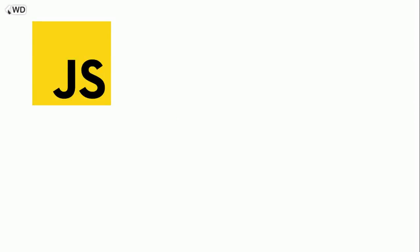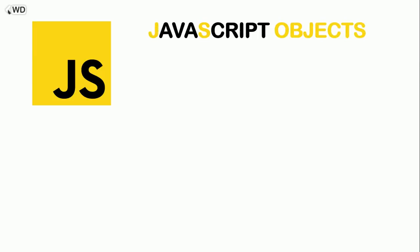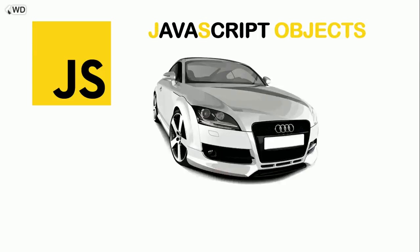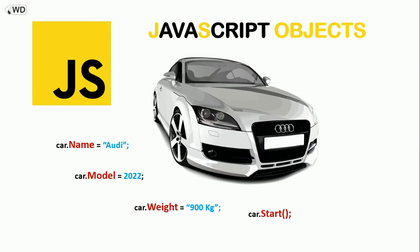Welcome. Today we're going to see another tutorial about JavaScript — it is JavaScript objects. A car is an object. A car has a name, a model, a weight — these are properties. So our car is an object and it has properties. It also has a start function, brake, and stop — these are methods. So an object in general has properties and methods.